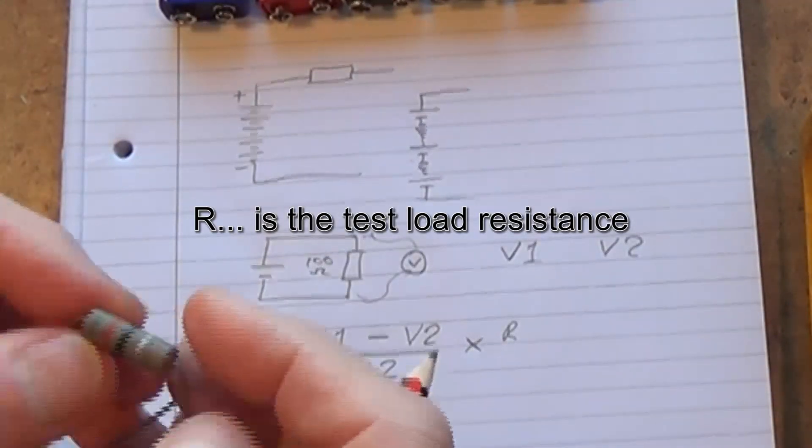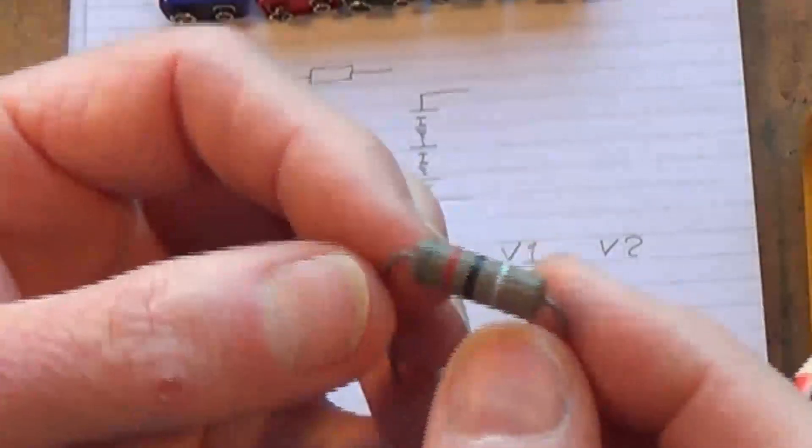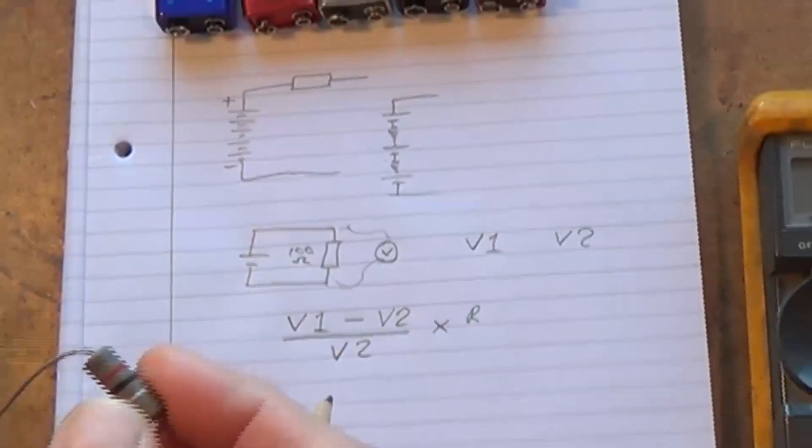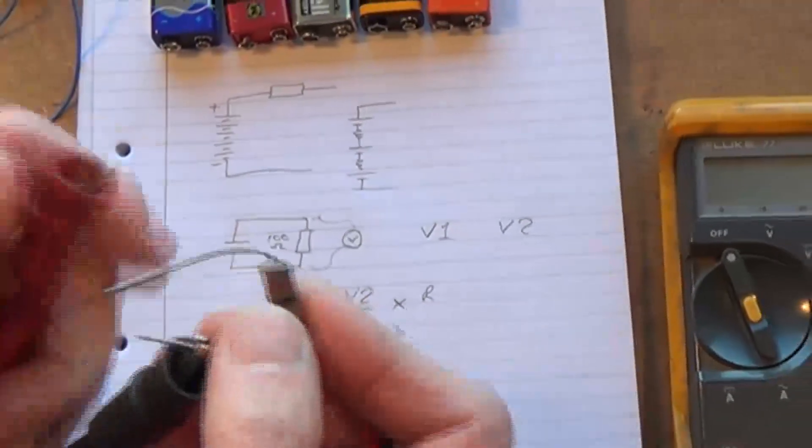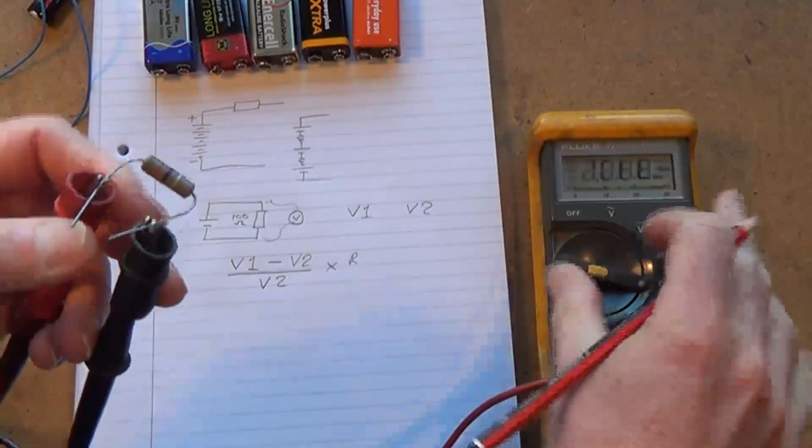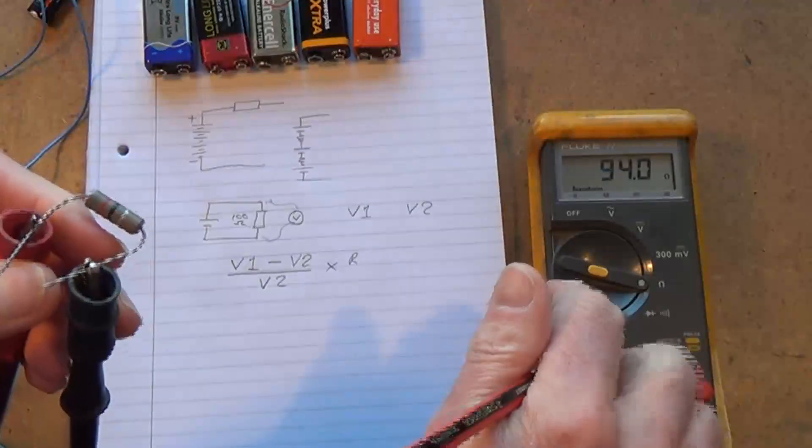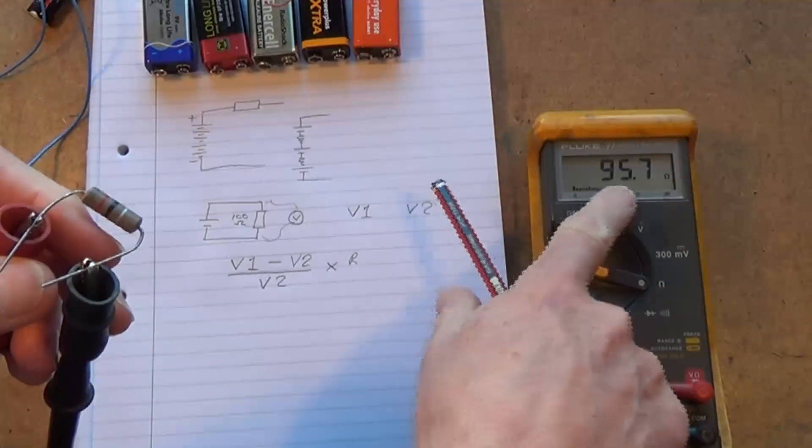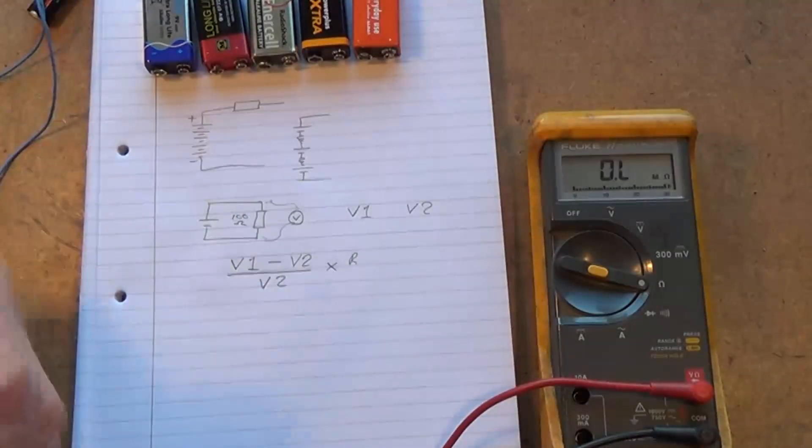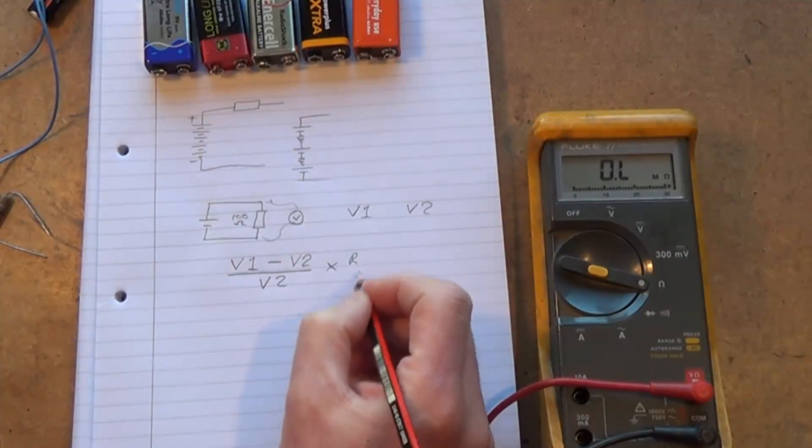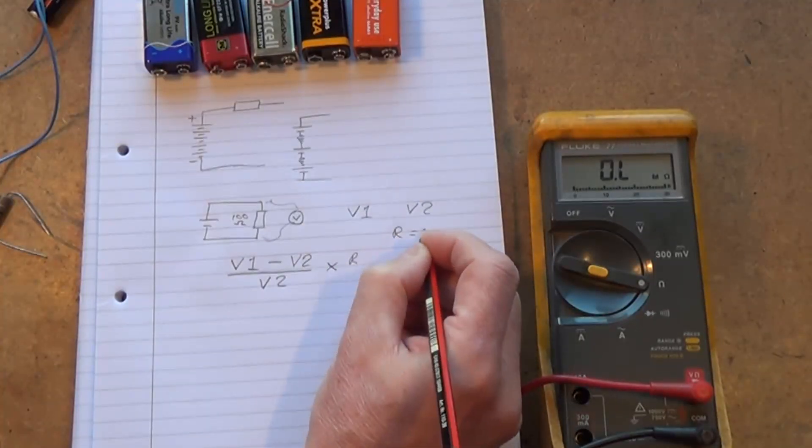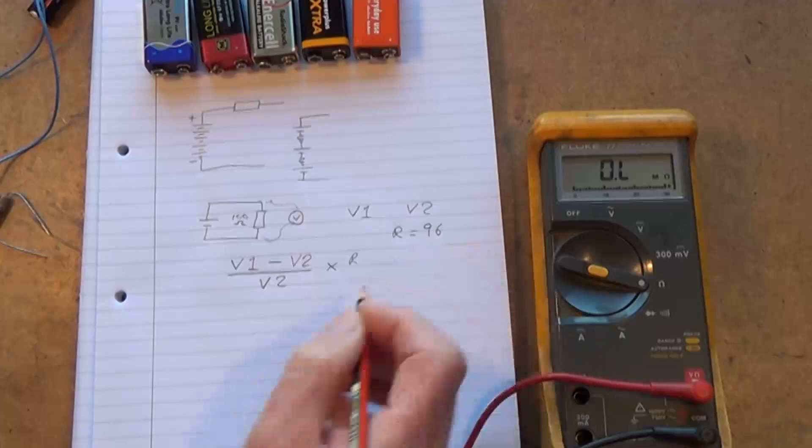What I've got here is a little resistor. That should be an 82 ohm, but its value like a lot of carbon resistors isn't what it says it should be. Just wait for the meter to wake up and you'll see it's actually 95.7 ohms, so I'm going to call that 96 ohms for what I'm doing here. So we'll put R equals 96 ohms.